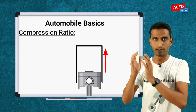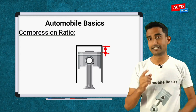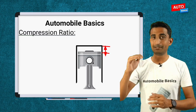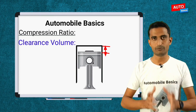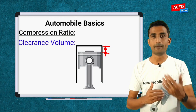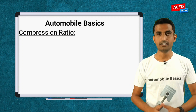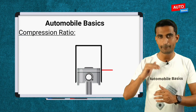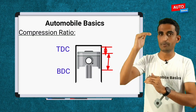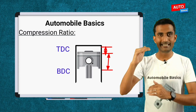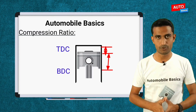What is the volume above the piston when the piston is at TDC — the maximum upward travel? Clearance volume and swept volume are very important to measure the compression ratio. In simple words, the compression ratio is the ratio between the volume of the cylinder when the piston is at BDC to the volume of the cylinder when the piston is at TDC. When the piston is at BDC, that is the volume — the space — and when the piston is at TDC, that is the volume.